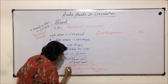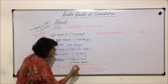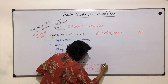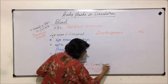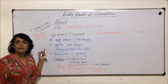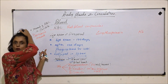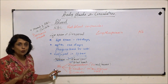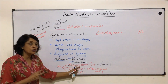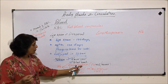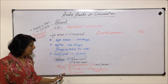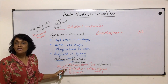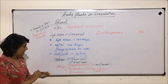Hemosiderin is the iron-rich part and it gets reused. The plasma membrane — Donald's membrane — is digested, and proteins and phospholipids get used up. Hemoglobin is broken down into three components: hemosiderin, which is the iron-containing one and gets reused; bilirubin and biliverdin, which are yellow in color and get excreted.